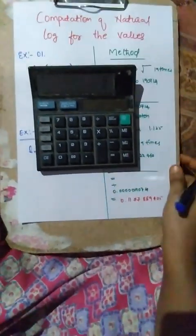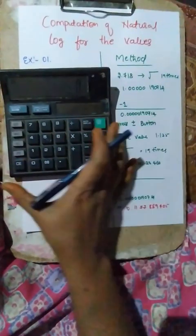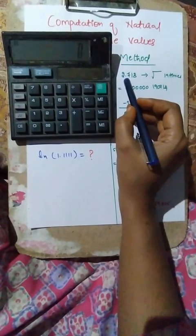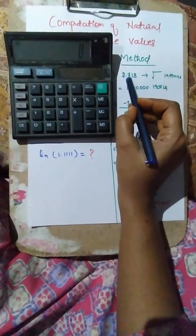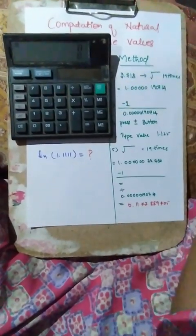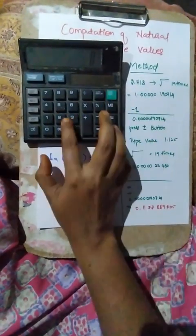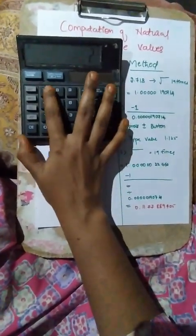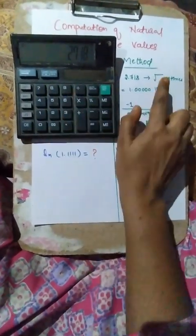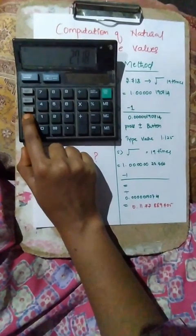For calculating this we need a calculator, which will be available with you. First of all, we have to press 2.718 nineteen times. So: 1, 2, 3...